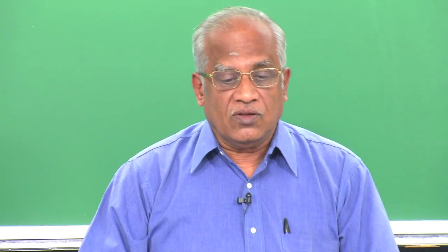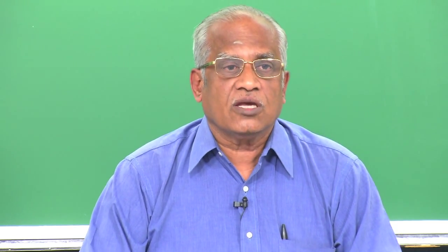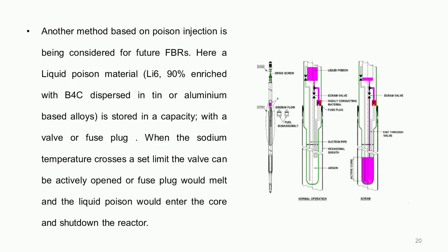Another method is based on poison injection, similar to thermal reactors. For instance, a liquid poison system uses lithium-6 as poison along with boron carbide, put in a tin or aluminum-based alloy with a fuse plug. This fuse plug melts when sodium crosses a particular temperature. However, there is still a need to determine how to remove this poison from the sodium afterward — this area needs more work.